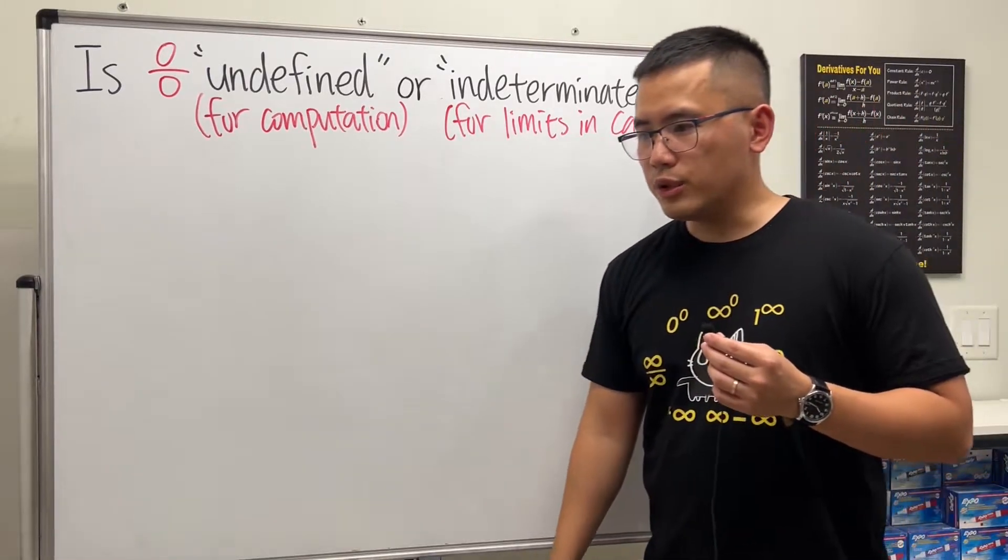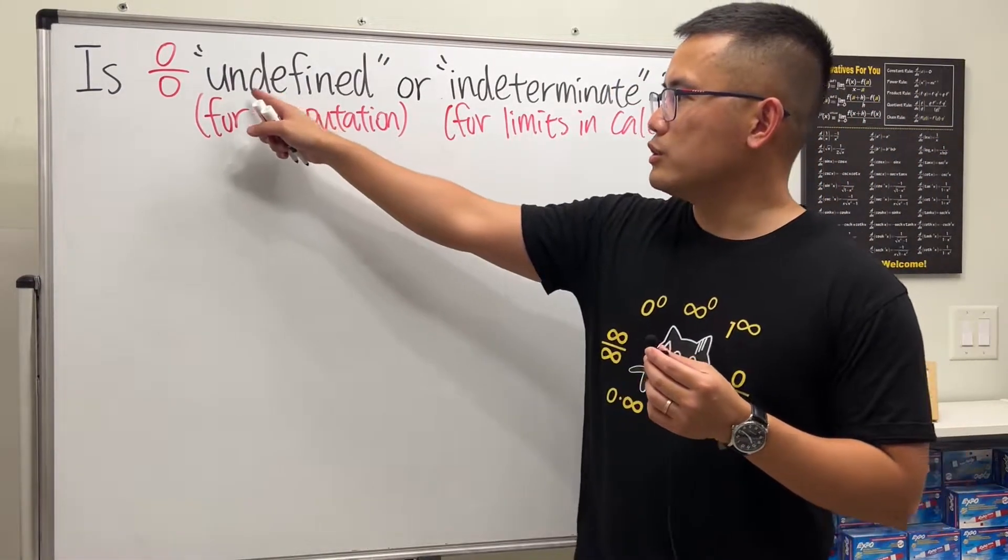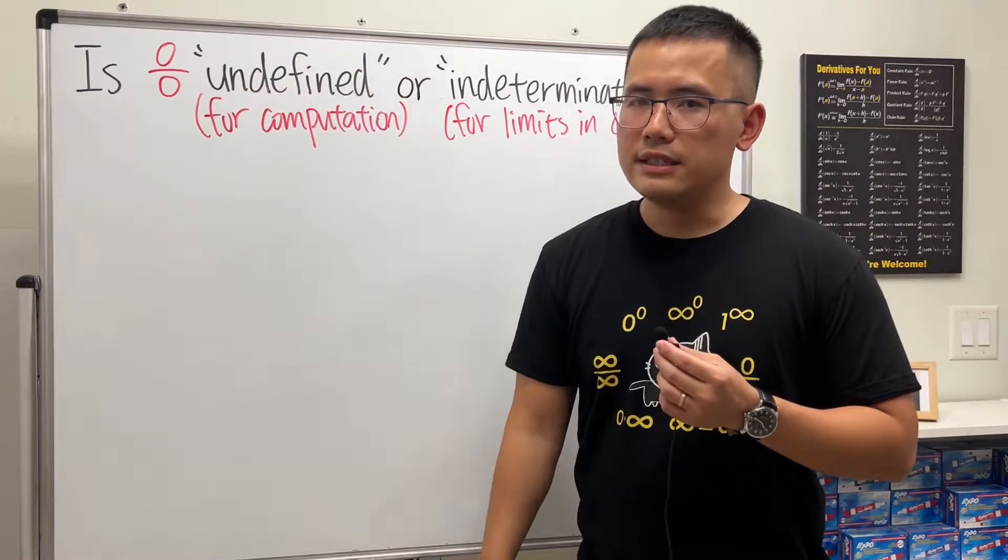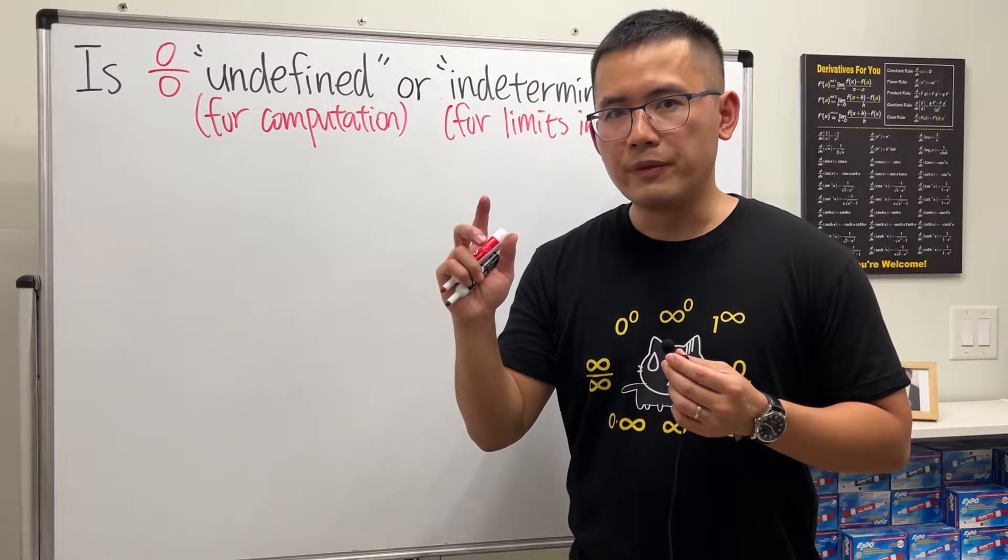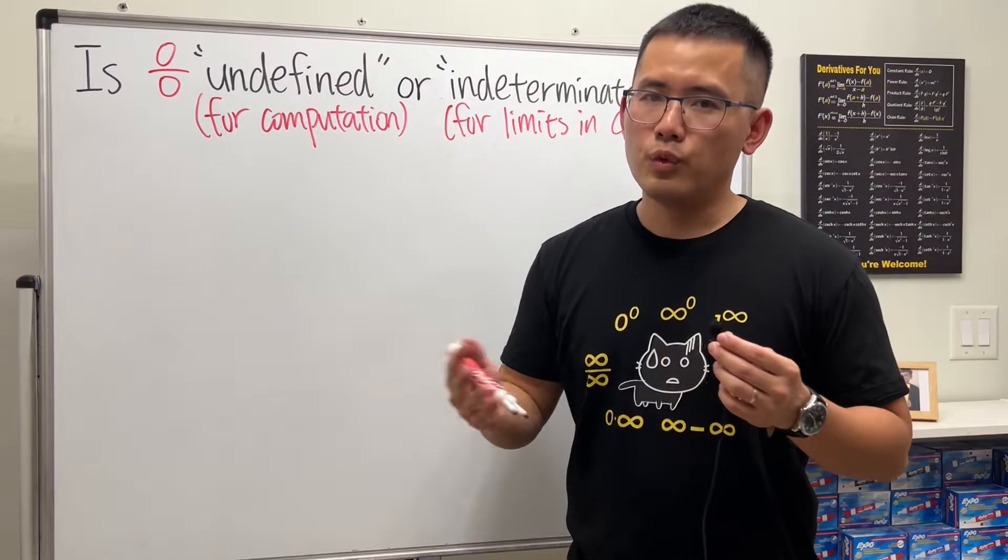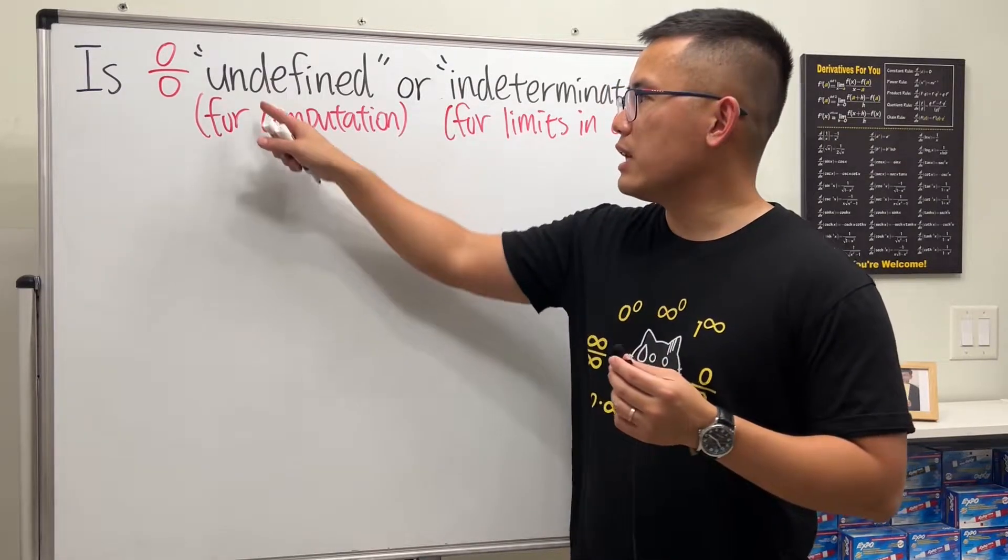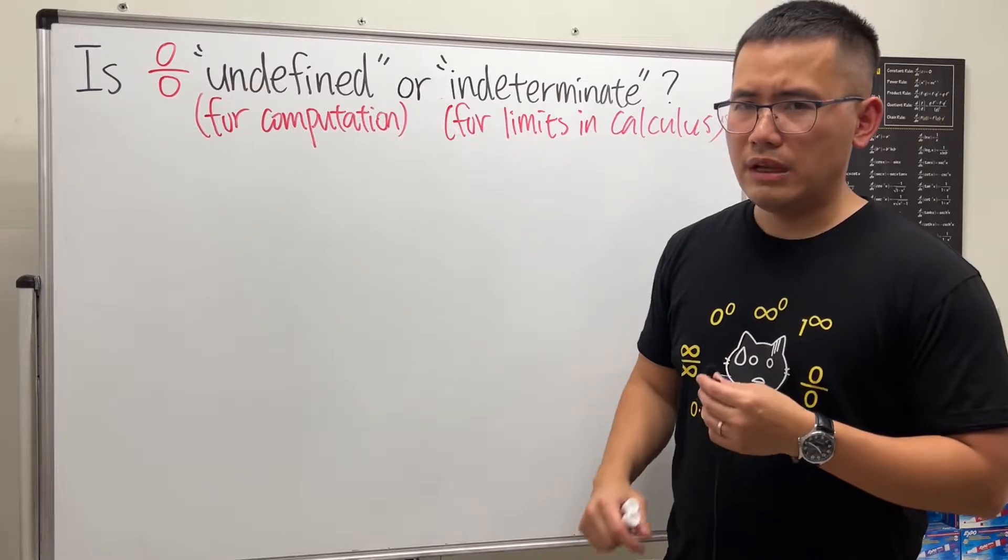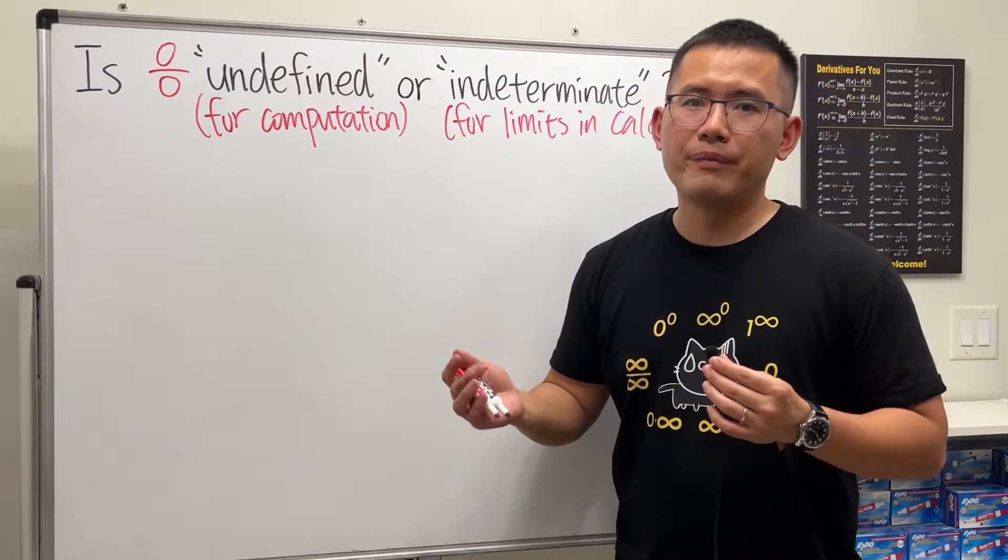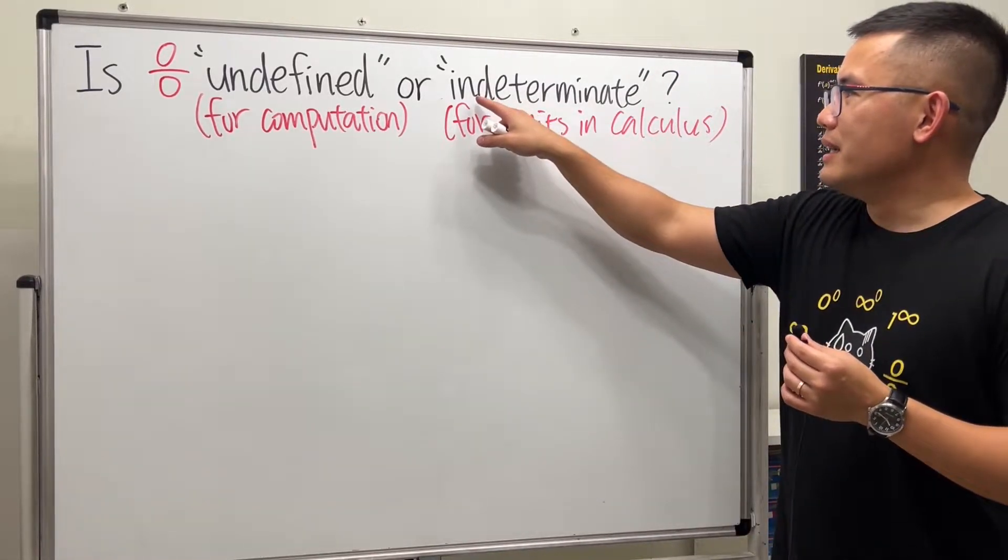And another thing to keep in mind is that sometimes we can just write down the word undefined as the answer, such as if we are trying to do five divided by zero. We don't have an answer for that, you just write down undefined as the answer and move on.